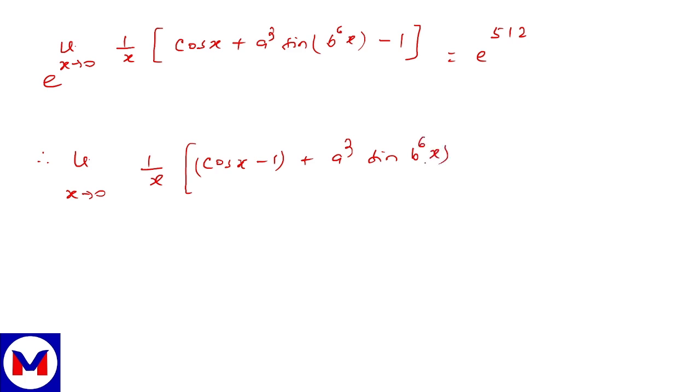This can be written as e to the power limit x tend to 0, 1 by x, cos x plus a cube sine b to the power 6x minus 1, which equals e to the power 512. Since the base e is the same, the powers are equal. So limit x tend to 0, 1 by x into cos x minus 1 plus a cube sine b to the power 6x equals 512.